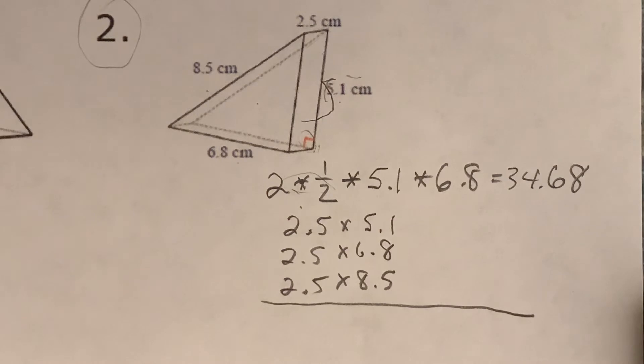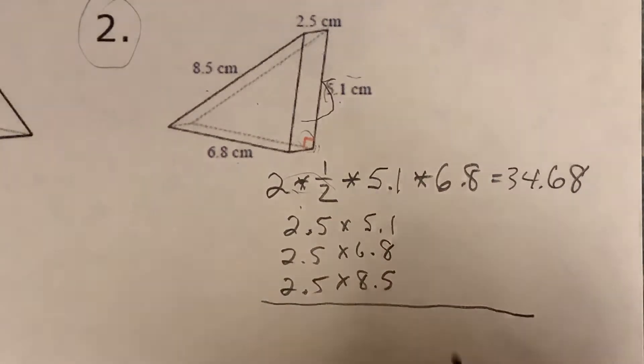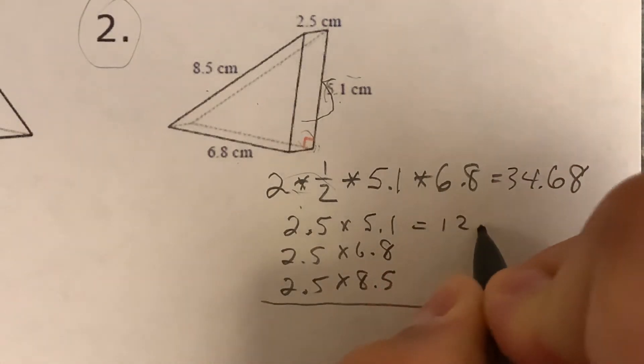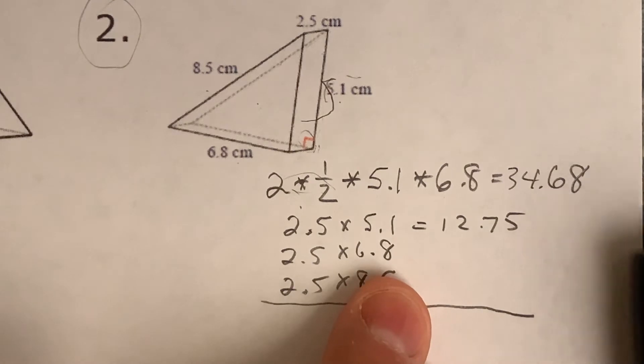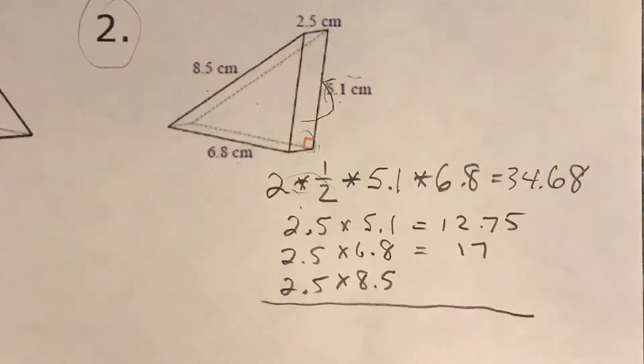A lot of people are going to say why are you doing two times one half that equals one? Yeah, you can just skip that. You can just do 5.1 times 6.8. Yes, that is perfectly fine, but I'm putting it in the formula so you know where I'm getting it from. So I'm going to do 5.1 times 6.8, that's going to be 34.68. And we got 2.5 times 5.1, that's 12.75.